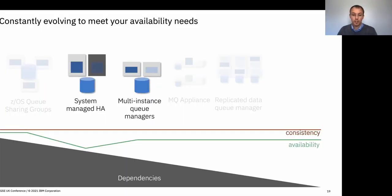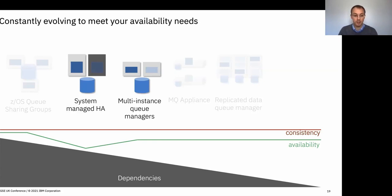One of the other things we've been focusing on is making sure we can provide all of these HA capabilities in the environments that you need. If we look specifically at cloud environments, some of those features I just discussed aren't necessarily as applicable — if you want to deploy containers in a cloud environment such as IBM Cloud or AWS, then queue sharing groups, the appliance, and RDQM aren't so applicable because of either the environment they run in or because they're specific to virtual machines rather than containers.